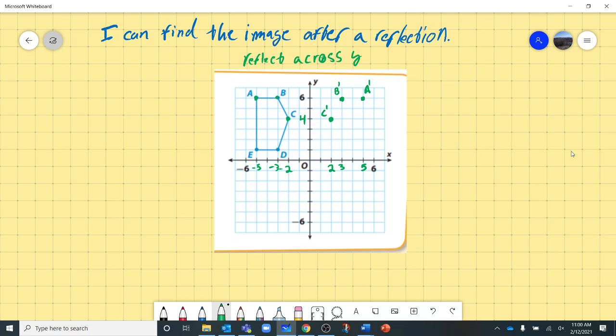My E prime is at negative 5, positive 1. So I'm going to go to positive 5, positive 1. Here's my E prime.